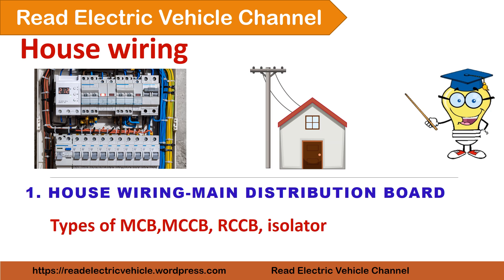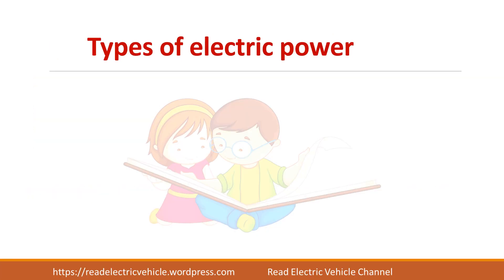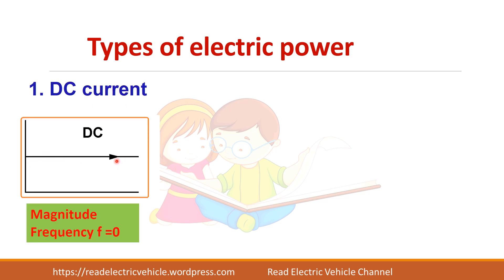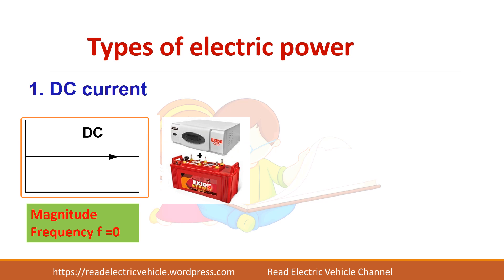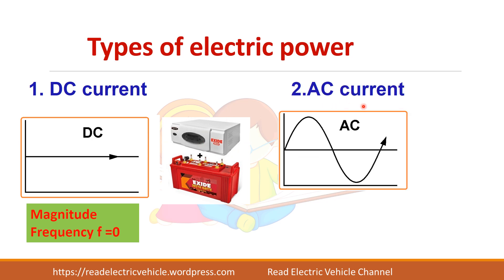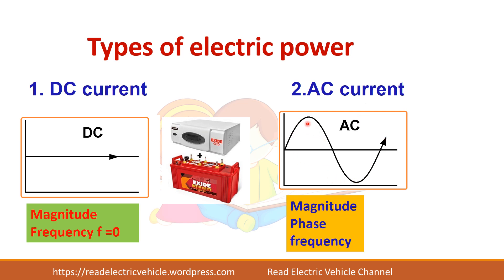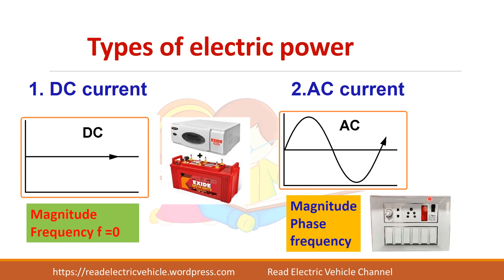In this video, let us see about the components used in distribution boards in houses. There are two types of electric power: direct current (DC), which is specified by its magnitude because frequency is zero, with battery being the best example; and alternating current (AC), which is specified by its magnitude, phase, and frequency. Normally, what we get in our homes is AC supply.